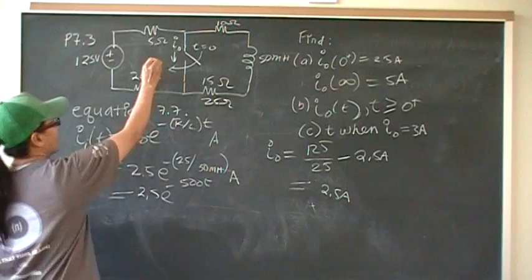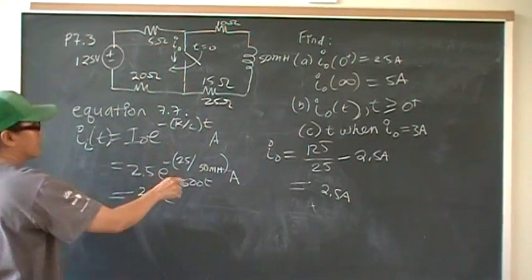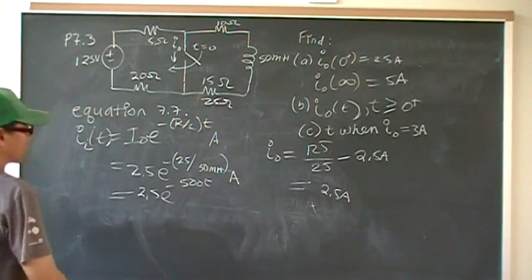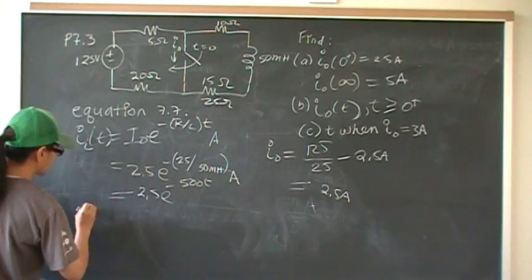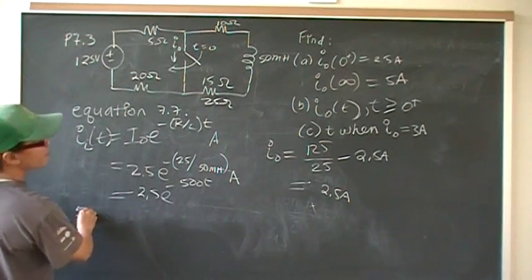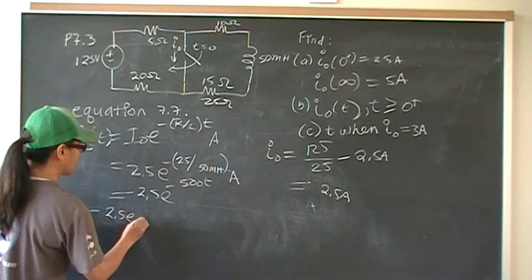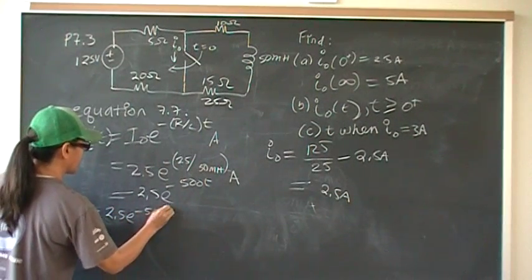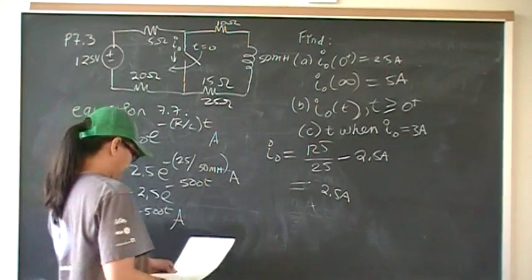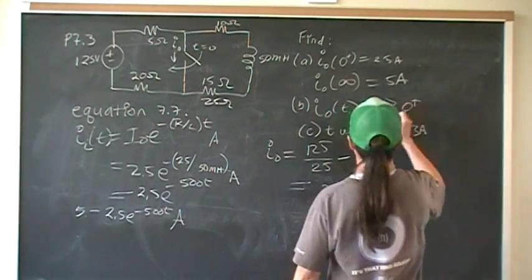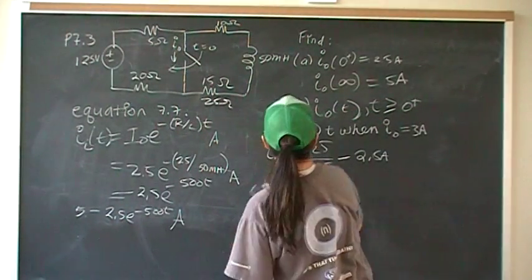Therefore, this current, then, is going to be this DC steady state, the long term, the 5 amps, minus 2.5 E to the negative 500 T amps. And that is part B.